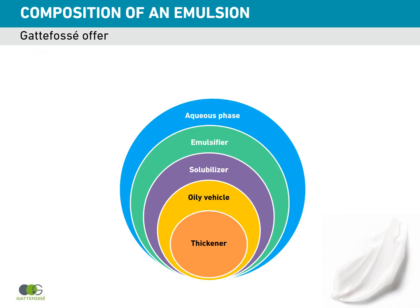As you might know, the composition of an emulsion is complex. In this graph, you can see the case of an oil and water emulsion where the external phase is mainly water, so called the aqueous phase. The internal phase contains many types of ingredients such as emulsifier, solubilizer, oily vehicle and thickeners. GAT4C offers excipients for all these functionalities.